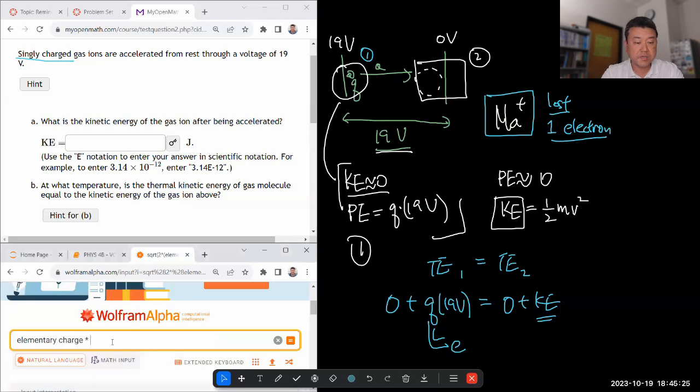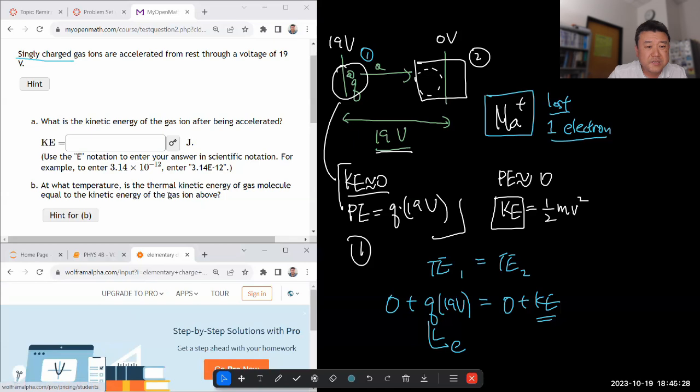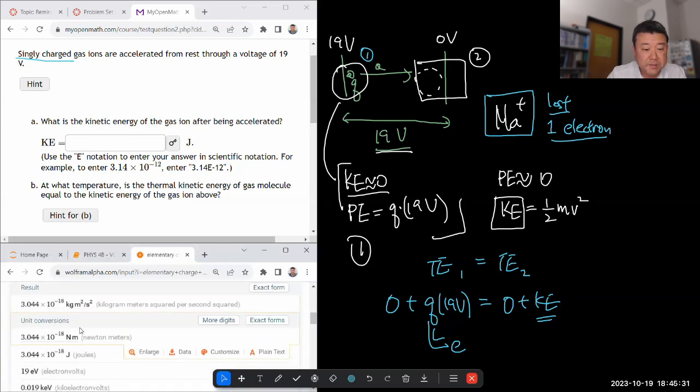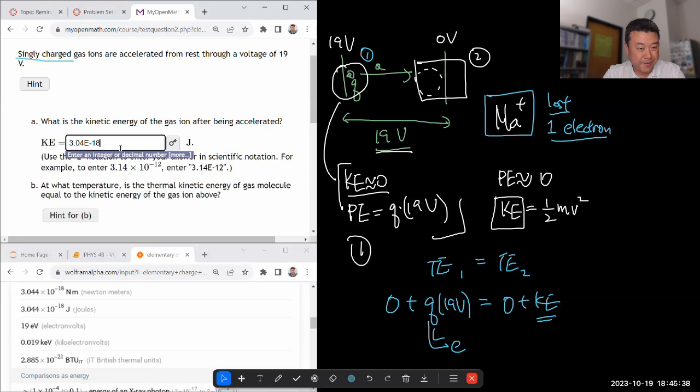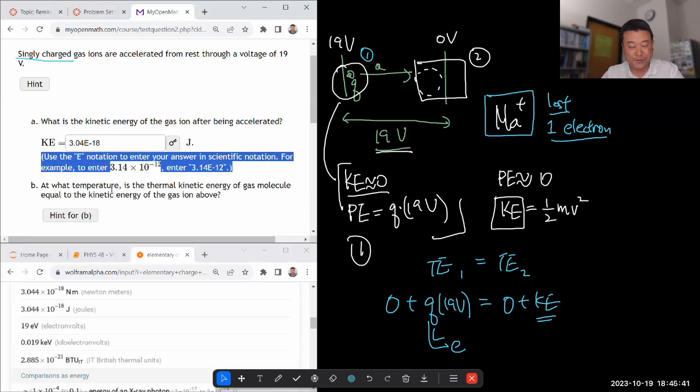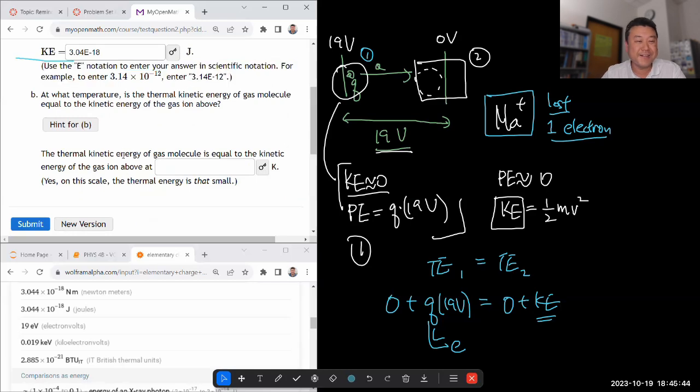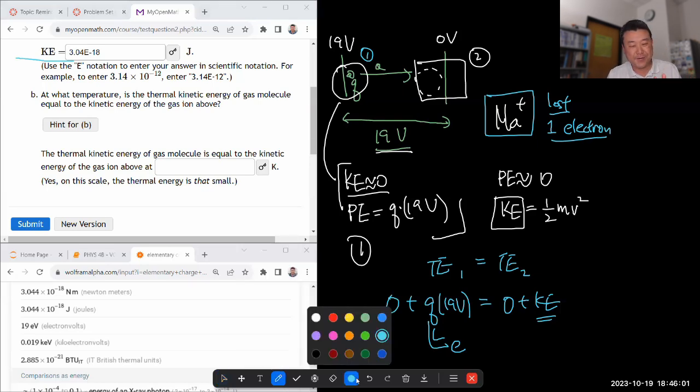So elementary charge times 19 volts. And it should have just to give me the amount of kinetic energy. Yeah, 8.04 times 10 to the minus 18. That seems small, but that's probably right. Because I see this recommendation for using scientific notation. There's probably reason that's there. Okay, what temperature is the thermal kinetic energy gas molecule equal to kinetic energy gas molecule. So, thermal kinetic energy gas molecule, if you remember from the thermodynamics, sorry, I promised you that you wouldn't have to deal with the thermodynamics, but there will be occasionally questions like this. Thermal kinetic energy, you could just look up the formula. It's a three halves kBT per particle.